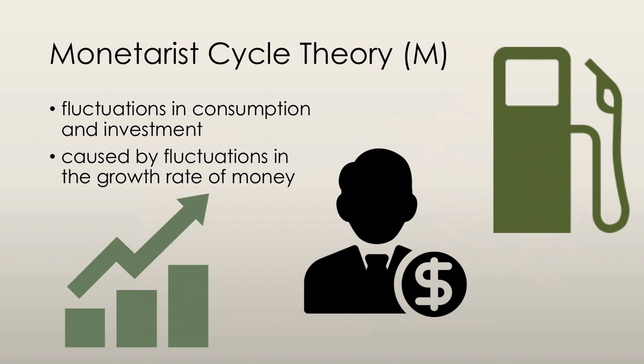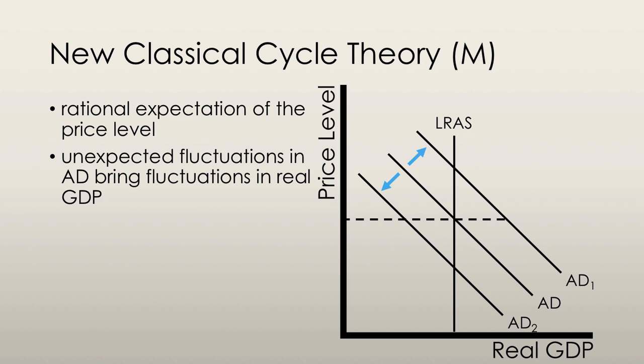The slower the growth rate of money, the slower the growth in consumption and investment, and thus the slower the increase in aggregate demand. In classical theory, the emphasis is on the influence of unexpected changes in aggregate demand. For any given expected price level, if aggregate demand decreases, people will not be expecting a decrease in the price level.